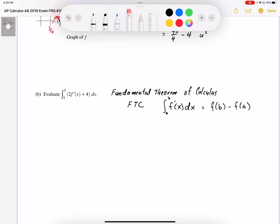Part B asks to evaluate the integral from 3 to 5 of 2 times f'(x) plus 4 dx.